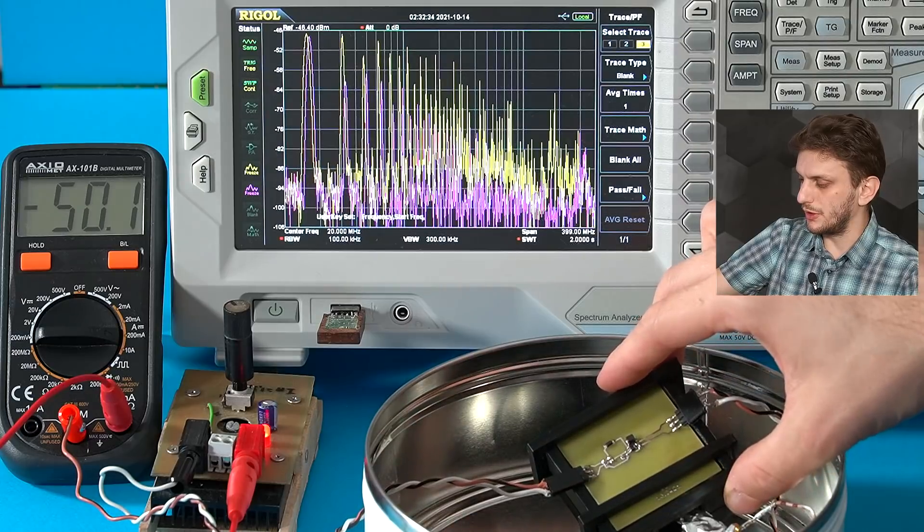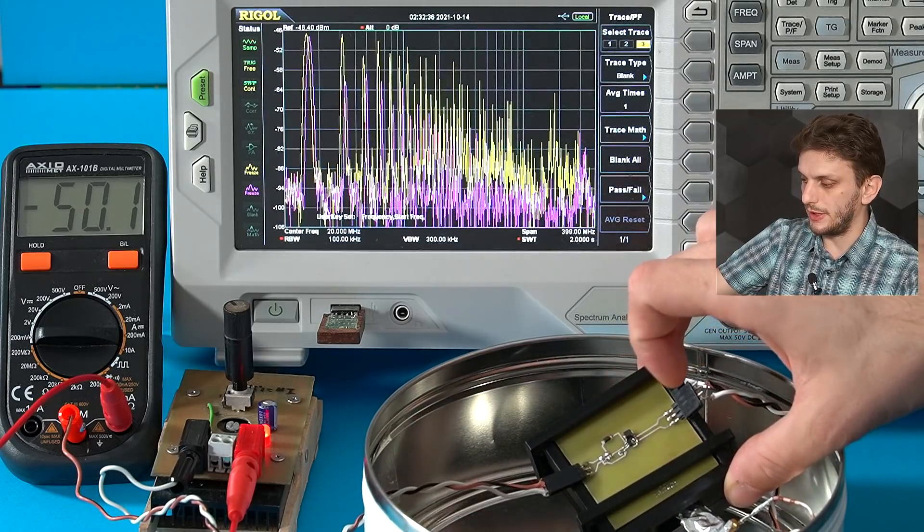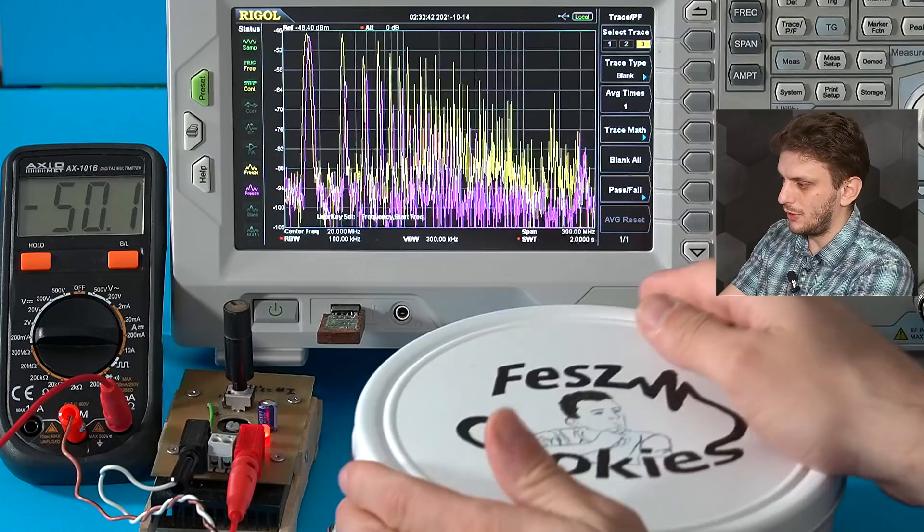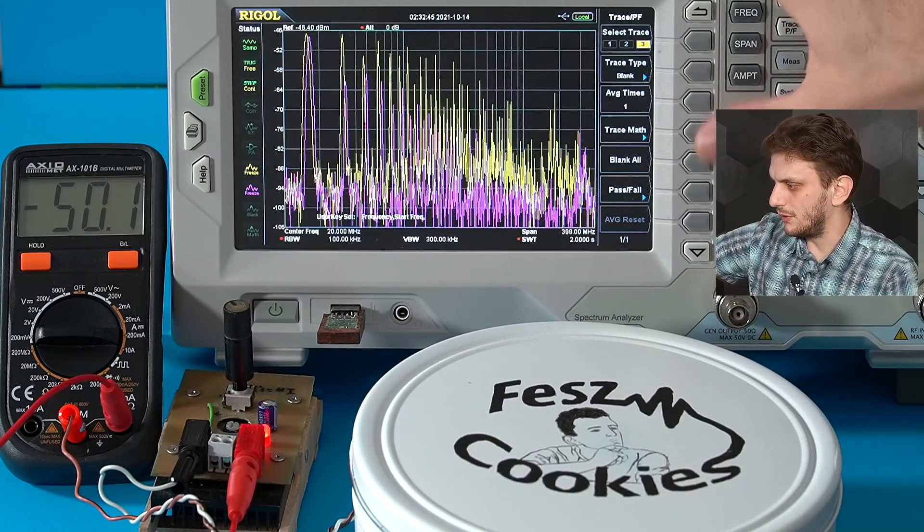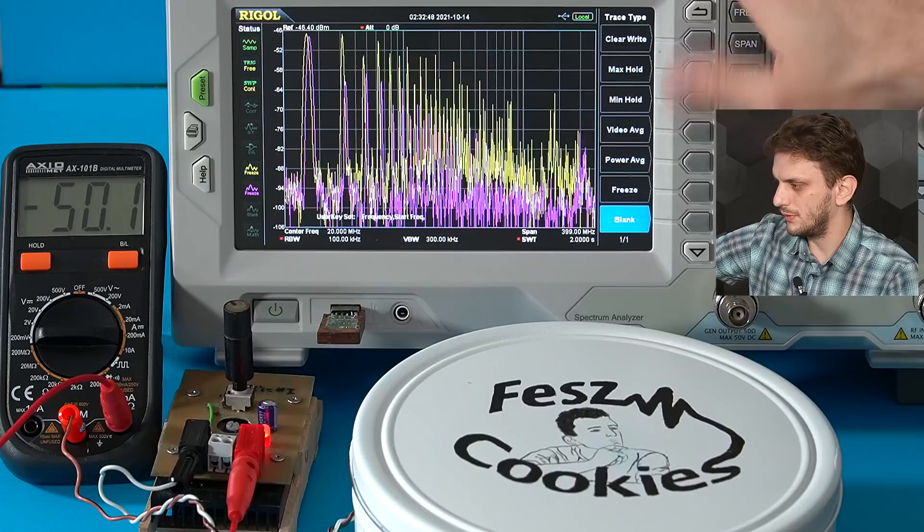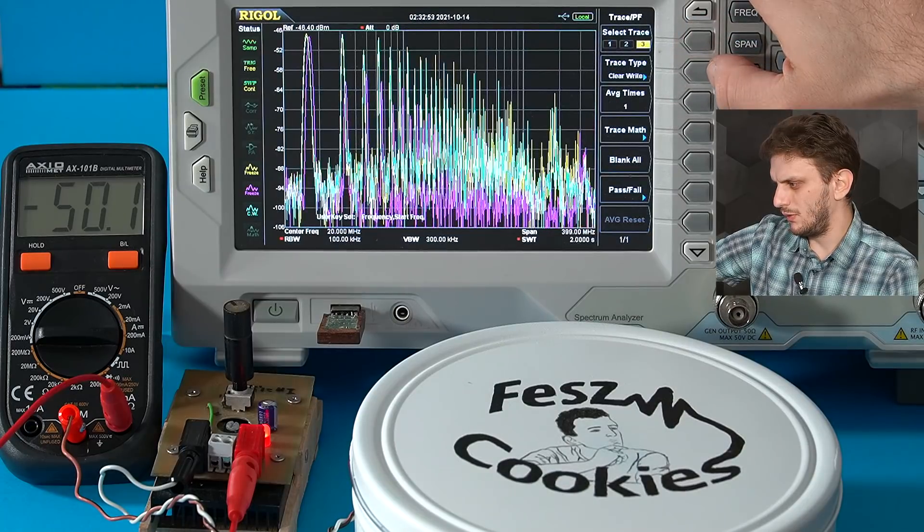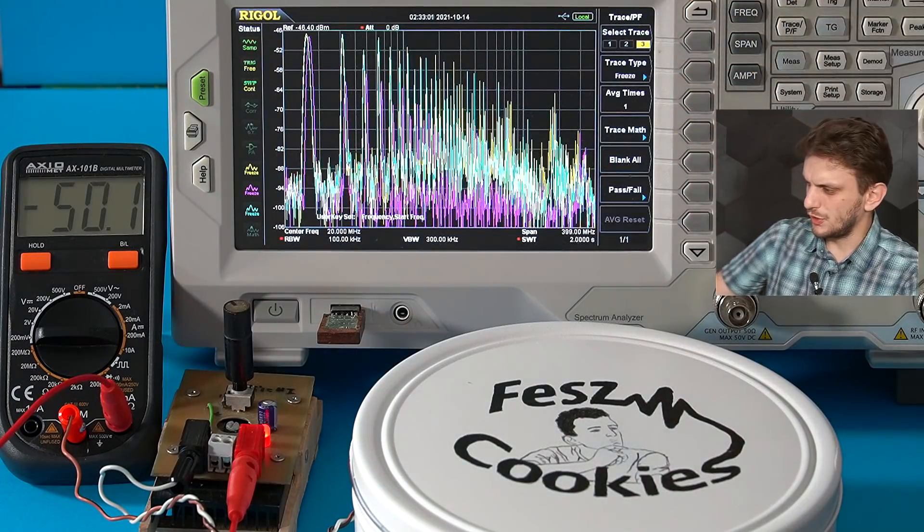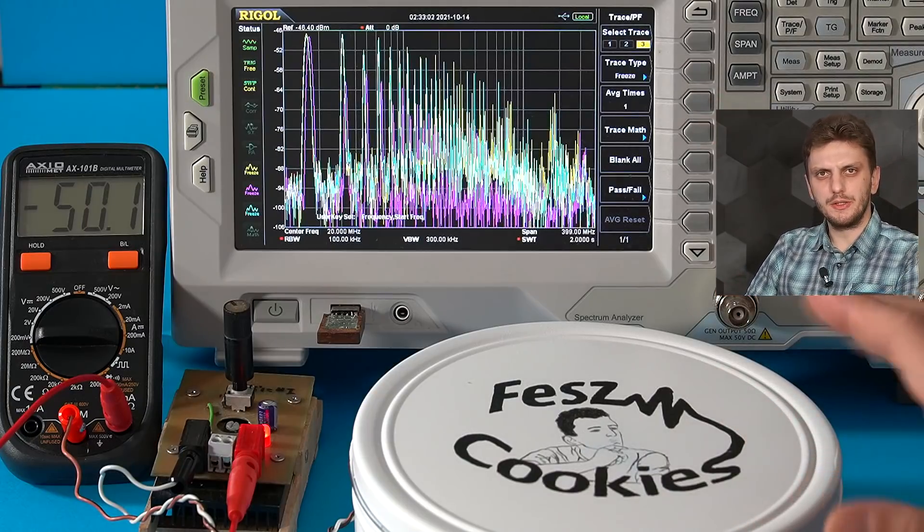But now let's see which of the boards that we prepared today is closer to the all small loops. So first of all, I prepared the board in which the input loop is small and the output loop is large. So let's just close the shielding box. And if we run the measurement, well, it looks a bit messy, but let's just freeze it.